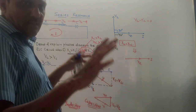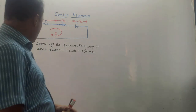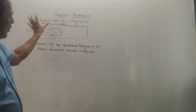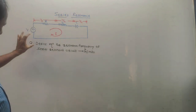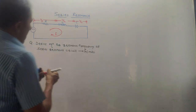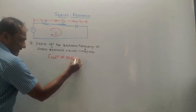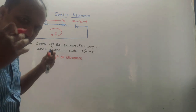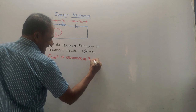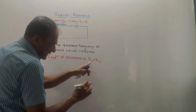Now we will derive an important expression: the resonance frequency for the series resonance circuit. The condition of resonance is XL equals XC — this is the condition at which maximum output is obtained from the circuit. XL is the reactance of the inductor, XC is the reactance of the capacitor. So using the equation XL = XC, which is known as the condition of resonance.